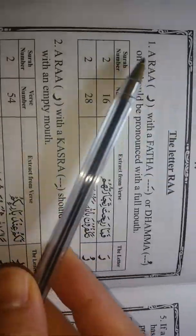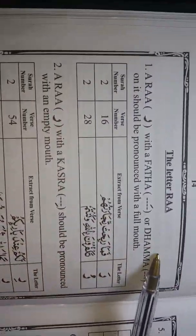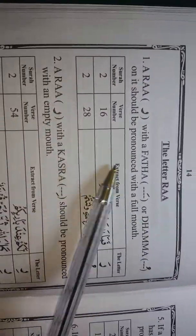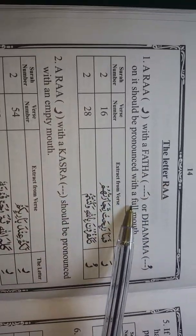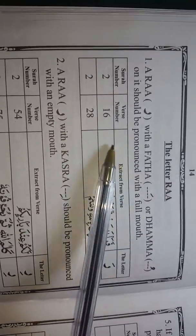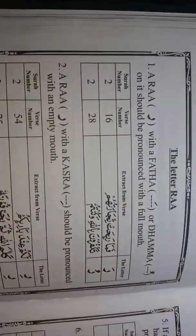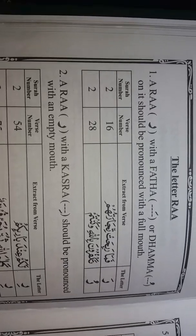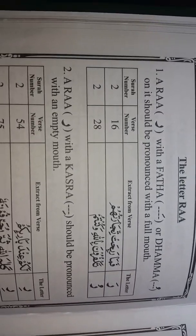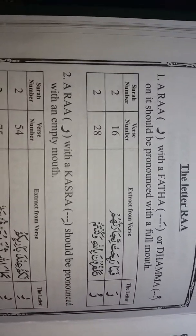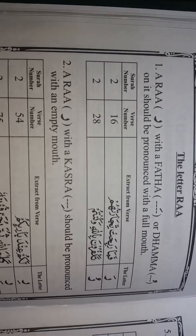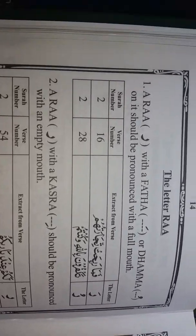Bismillahirrahmanirrahim. Assalamu'alaikum warahmatullahi wabarakatuh. This time we are learning about the letter Ra. Before we started, I will read a little doa: Rabbi Ziduni Ilman, Warsukni Fahman, Rabbi Ziduni Ilman, Wa Al-Hikni Bishalihin.